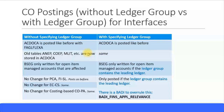The differences come in the next few rows. The BSEG table — the line item table — is only written for open item managed accounts that are affected. The same applies when specifying a ledger group, but BSEG will only be written if the ledger group you specify contains the leading ledger. So BSEG will only be written for open items if the ledger group contains the leading ledger.